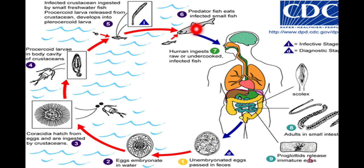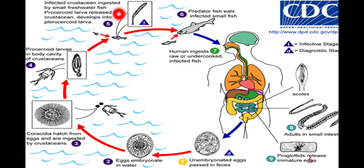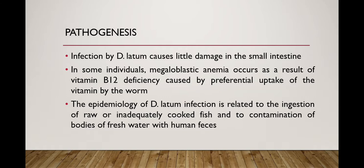When human beings consume the fish in raw or undercooked form, the larvae reach the small intestine and develop again into adult form, completing the cycle. The diagnostic stage in the case of D. latum is the un-embryonated eggs excreted with the feces of the infected human being, while the infective stage is the plerocercoid larvae present in the muscles of fresh water fish.